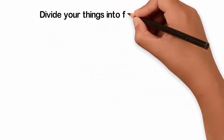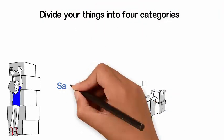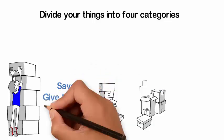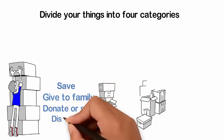Go through one room at a time. Divide your things into four categories: Save, Give to family, Donate or sell, and Discard.